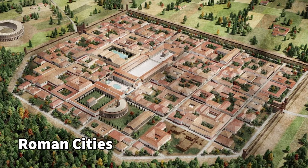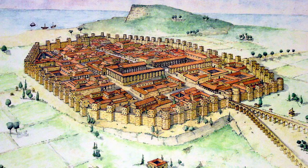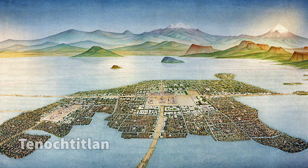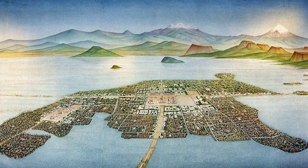During the Greek and Roman times, cities were also planned. The Roman Empire was able to provide road networks and water aqueducts to serve their cities. Tenochtitlan is another example, from the Aztec Empire, which is now modern-day Mexico City.